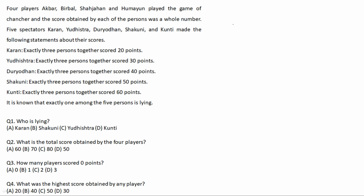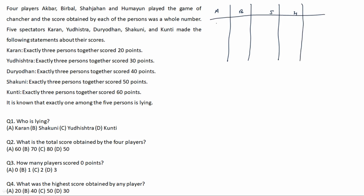We have 4 persons: A, B, S, and H. If we choose 3 persons at a time, the number of possibilities will be 4C3. Using the manual method: A, B, S; then A, B, H; then A, S, H; and finally B, S, H — giving us a total of 4 possibilities. So we can add 4 different 3-person score combinations.